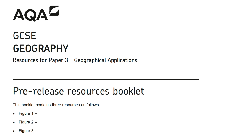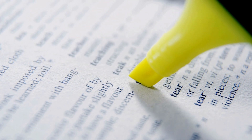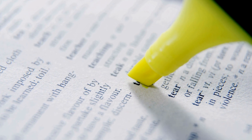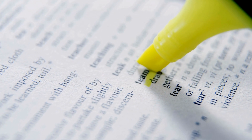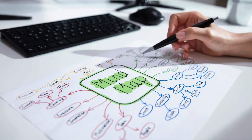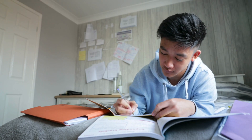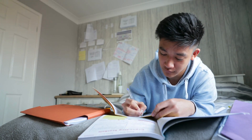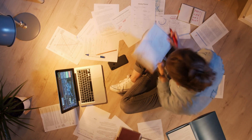You need to familiarize yourself with the content of the pre-release booklet. We strongly recommend not approaching this by just reading the booklet and highlighting information — studies show it is a really ineffective way of learning. Instead, as you read through the pre-release, do something with the information. Use active learning strategies such as creating mind maps, flashcards, or knowledge organizers for each figure. Internet Geography has tips on these techniques.